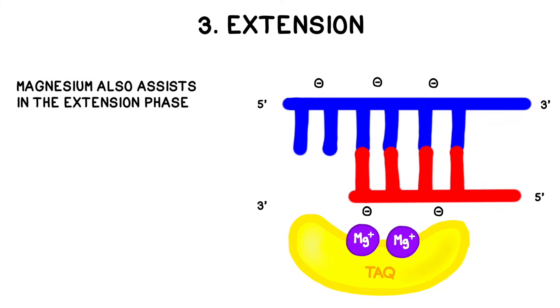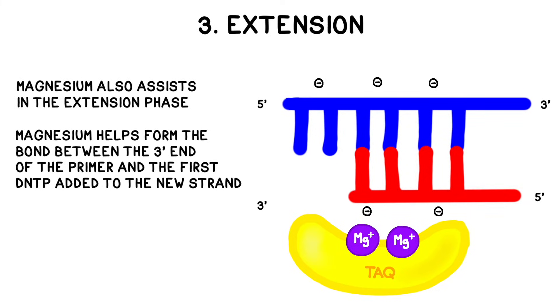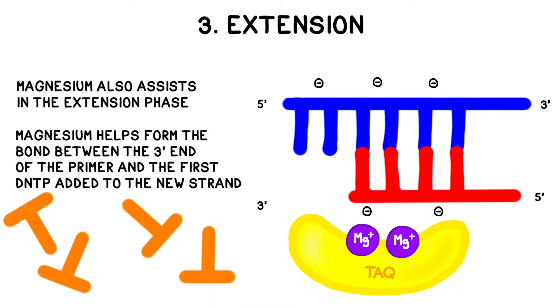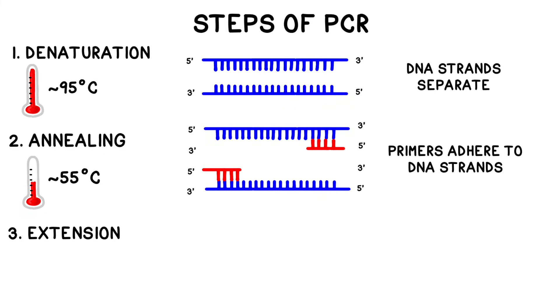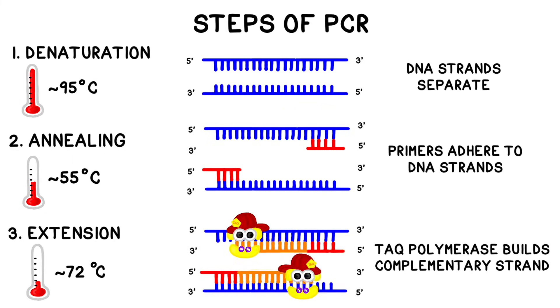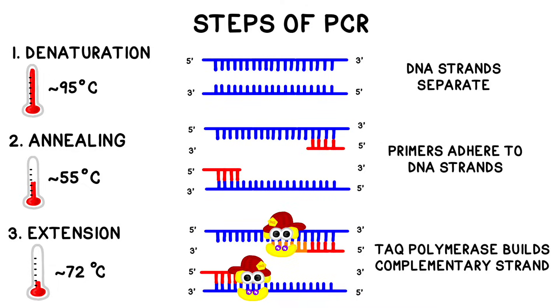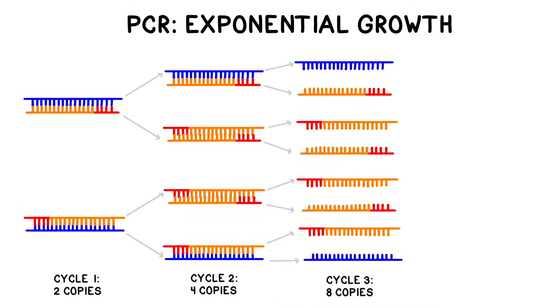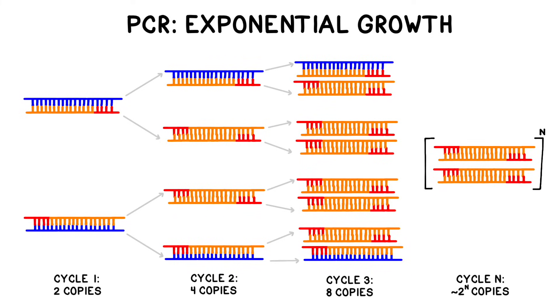Magnesium also plays a role in the extension phase — it helps to form a bond between the 3' end of the primer and the phosphate group of the first dNTP that we add. PCR is a cycle: the denaturation, annealing, and extension phases repeat over and over, doubling the number of copies each time. After 1 cycle there are 2 copies, then 4, then 8, then 16, and so on. After 25 cycles, there will be 2 to the 25, or roughly 33 million copies. Even though the original sample may have been quite small, if the process has been performed correctly, there will now be plenty of material for analysis.